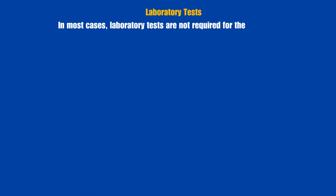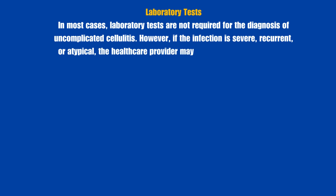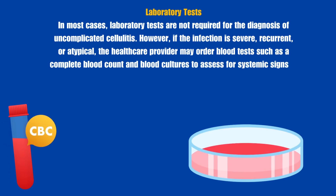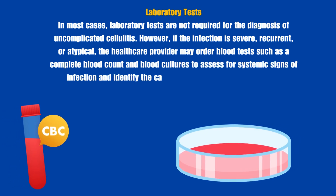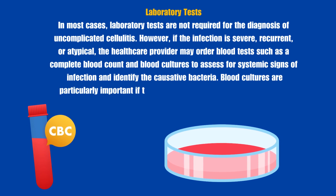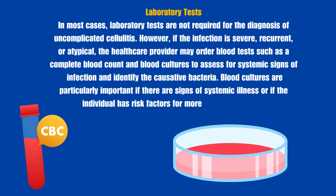Laboratory Tests: In most cases, laboratory tests are not required for the diagnosis of uncomplicated cellulitis. However, if the infection is severe, recurrent, or atypical, the healthcare provider may order blood tests such as a complete blood count and blood cultures to assess for systemic signs of infection and identify the causative bacteria. Blood cultures are particularly important if there are signs of systemic illness or if the individual has risk factors for more serious infections.